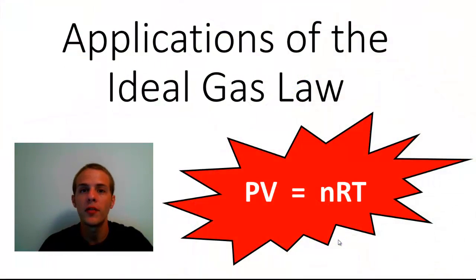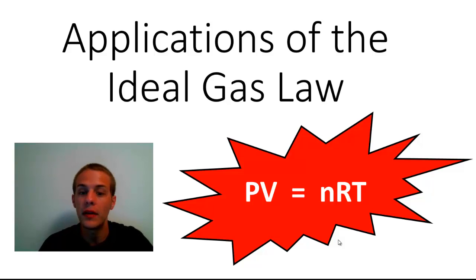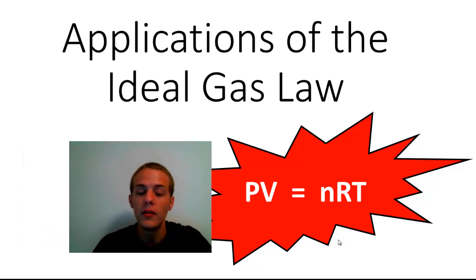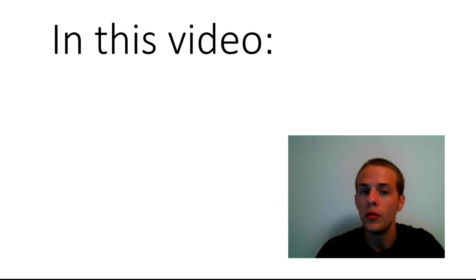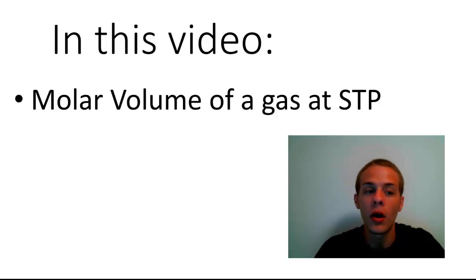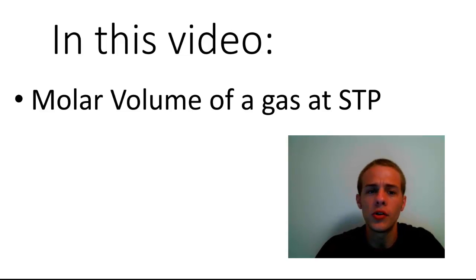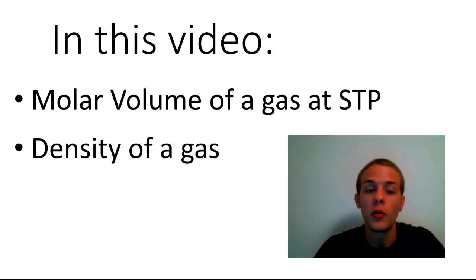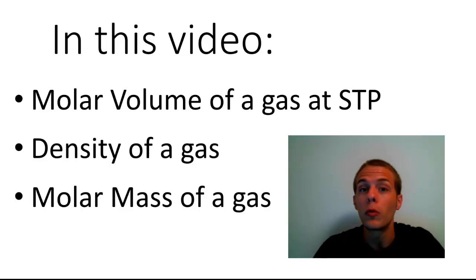Hey, how's it going everybody? In this video we're going to talk about some applications of the ideal gas law. In the last video we learned that the ideal gas law equation is PV equals nRT, meaning the product of the pressure and volume of the gas equals the product of the amount of the gas in moles and the temperature multiplied by the ideal gas constant R. In this video we're going to learn how the ideal gas law can be used to derive three additional properties of gases: the molar volume of a gas at STP, the density of a gas, and the molar mass of a gas.